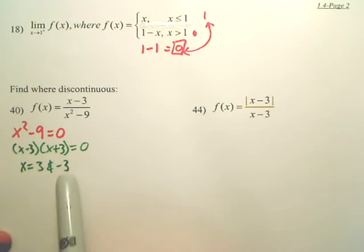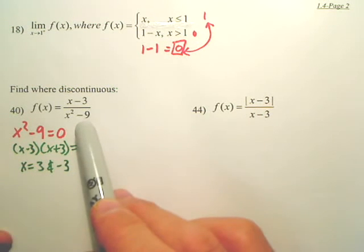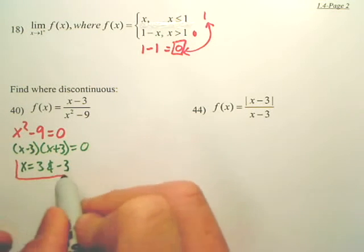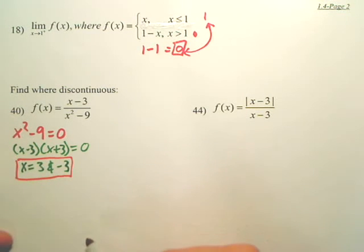So I get x equals 3 and negative 3. So both 3 and negative 3 will make this graph have either holes or asymptotes. Are we okay with that? Those are my answers. Those are where it will be discontinuous.